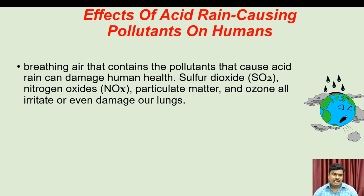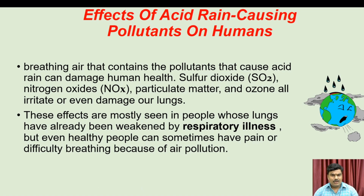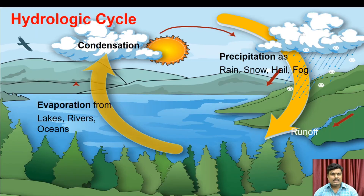The effects of acid rain-causing pollutants on humans: breathing air that contains pollutants that cause acid rain can damage human health. Sulfur dioxide, nitrogen oxide, particulate matter, and ozone all irritate or even damage our lungs. These effects are mostly seen in people whose lungs have already been weakened by respiratory illness. But even healthy people can sometimes have pain or difficulty breathing because of air pollution.